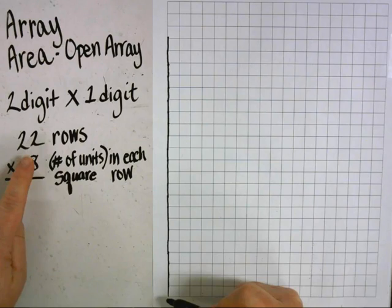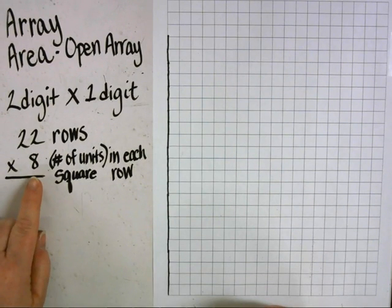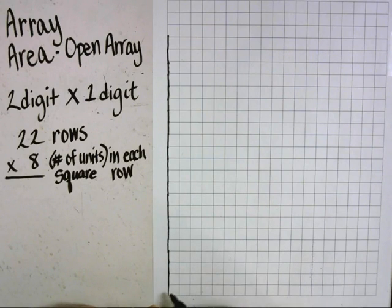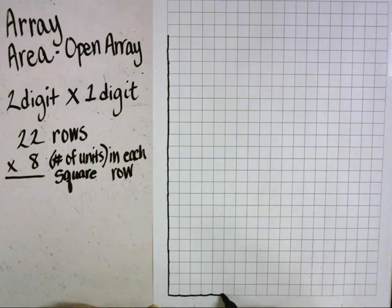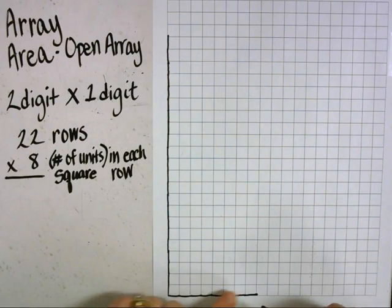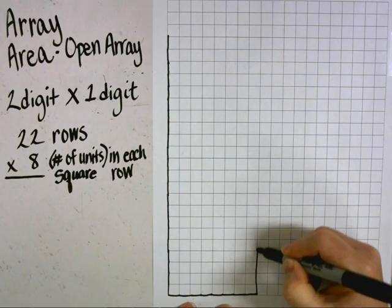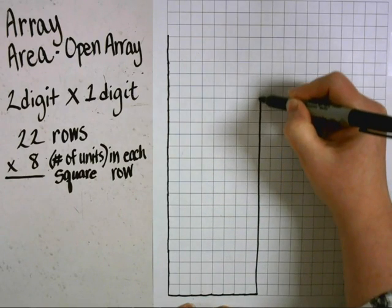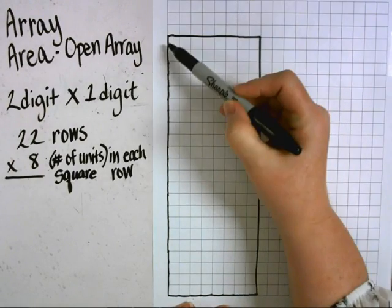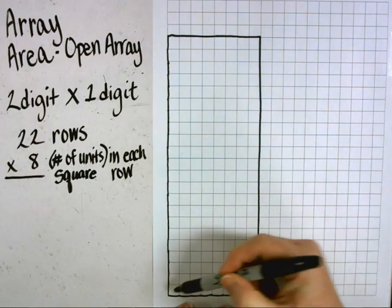I now need the other dimension for the other factor in my problem, which is 8. So I have 8 in each one of the 22 rows. I need to count over 8 squares: 1, 2, 3, 4, 5, 6, 7, 8. I now have the dimensions of the two factors in my problem — 22 rows and 8 in each row — so I'm going to go ahead and close up the array. I now have a rectangle that measures 22 squares by 8 squares.